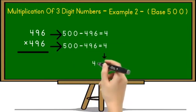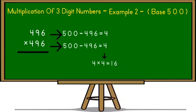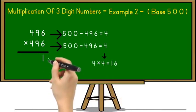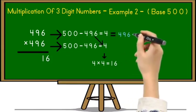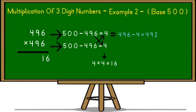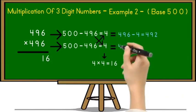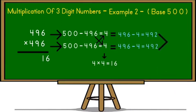So here we have to multiply 4 with 4. So it is equal to 16 which is a 2 digit number. So no need to add 0 before it. So 16 we have to write down in a product. After that we have to subtract 4 from 496. So that is equal to 496 minus 4 is equal to 492 and now subtract second one 496 minus 4 which is equal to again 492.